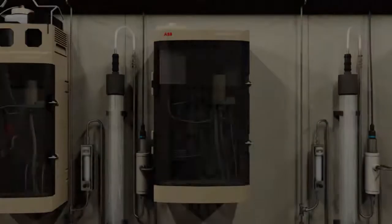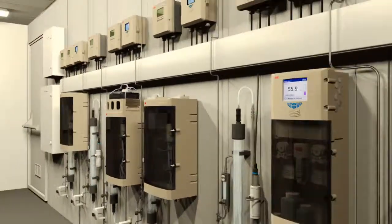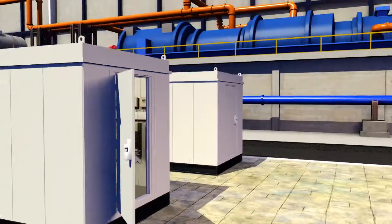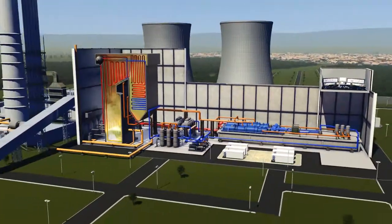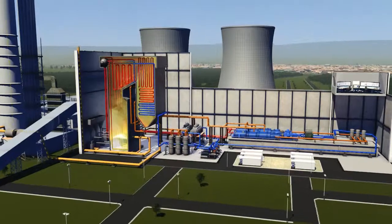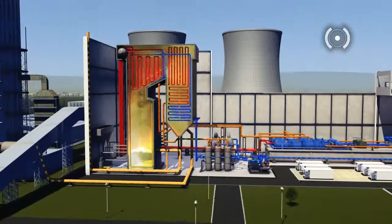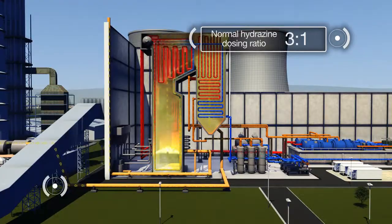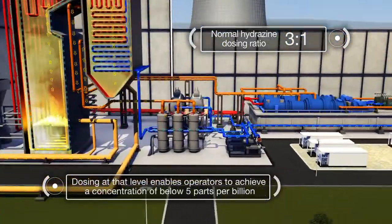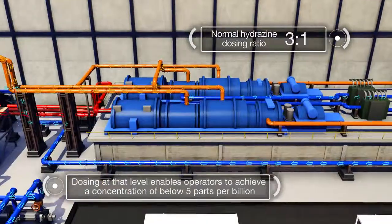Dosing boiler feed water with hydrazine or carbohydrazine can have a major impact on minimizing dissolved oxygen levels. Dosing in a ratio of 3 parts hydrazine to the expected level of dissolved oxygen will enable operators to achieve an acceptable concentration of below 5 parts per billion.